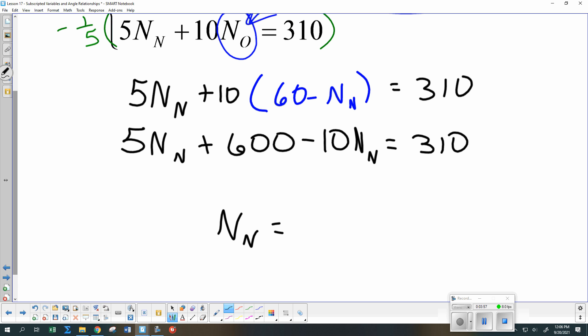Everybody shout out. What is NN? 58 is excellent. And so I got that if I combined my 5NN minus 10NN I had minus 5NN. If I subtract the 600 on both sides I get a negative 290. And then divide both sides by negative 5 and I come up with 58. Have I finished the problem?